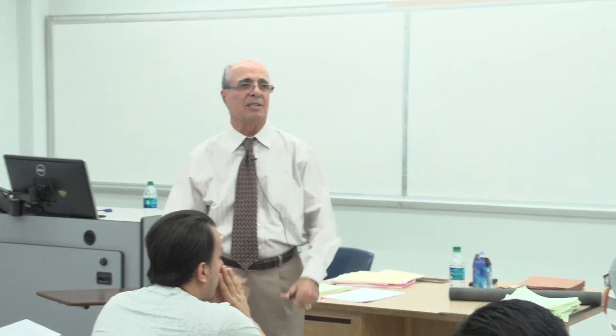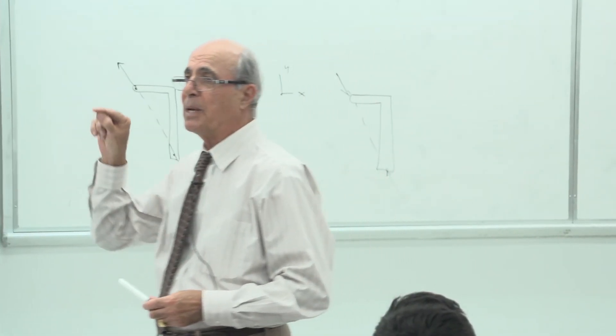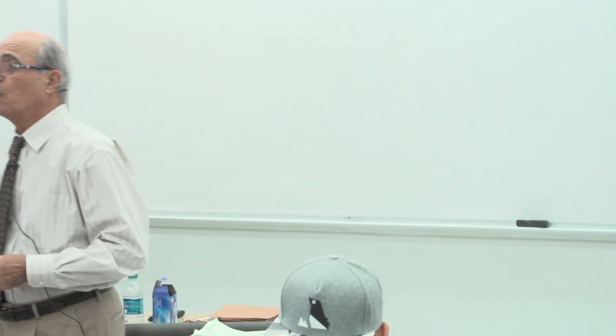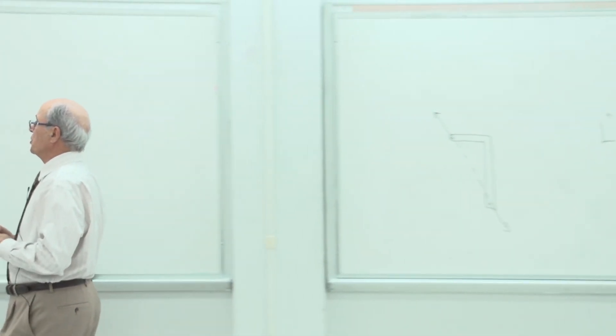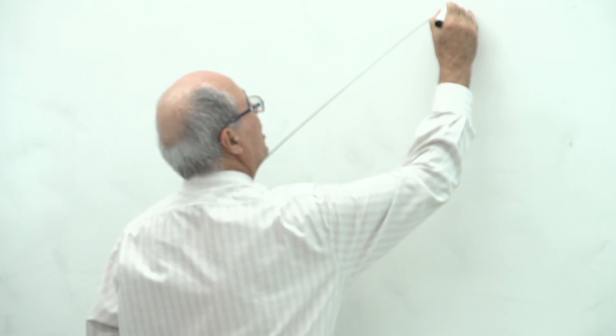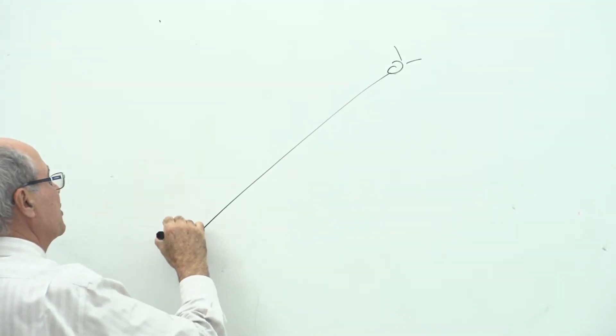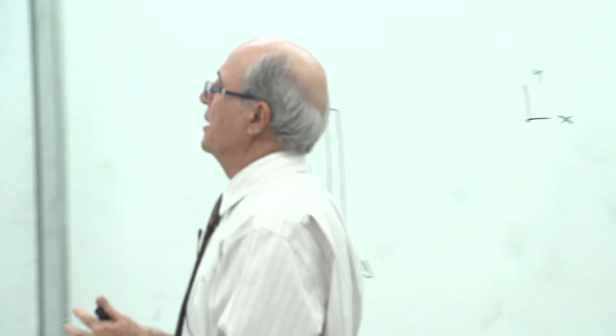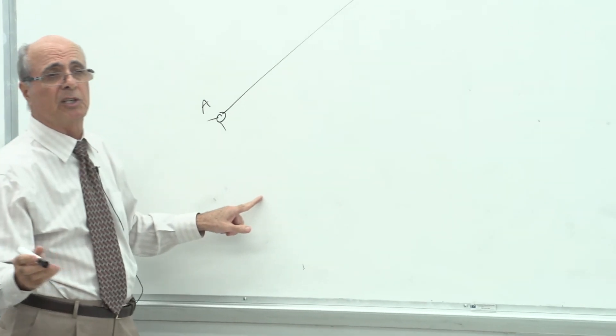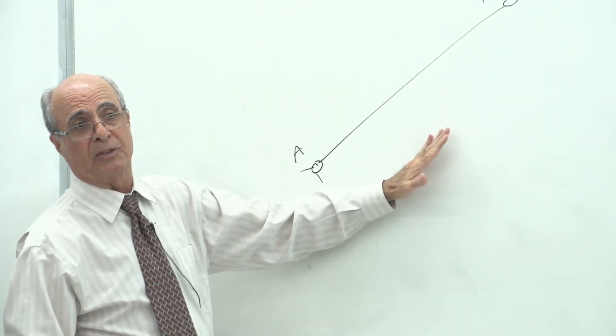Today's focus is the sign convention for trusses — many people have trouble with this and you must pay 100% attention. Without understanding it, you cannot solve a truss or determine tension and compression in members. Write this down: the sign convention for truss members. A member connects joint A to joint B. In trusses, members are straight lines and are two-force members — so they are in pure tension or pure compression.